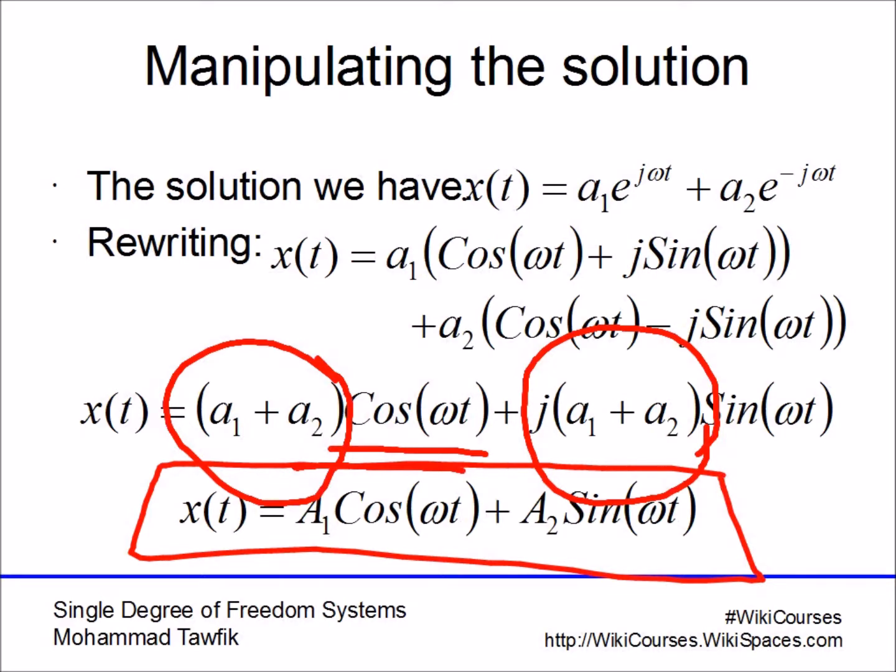You'll find that we can write down the solution in this form which is A₁ cos(ωt) + A₂ sin(ωt). Here the solution appears in a form that is more familiar to us in which you are having two harmonic terms, the sine and the cosine terms each multiplied by a constant and added together. Again we can see that they are two solutions added to each other.